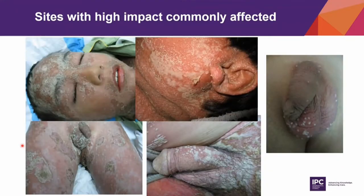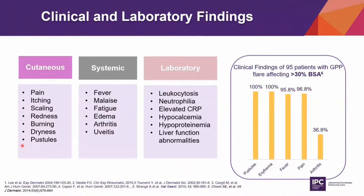Facial and genital lesions are actually not uncommon in our patients with this distressing disease. The affected skin is usually very painful, and patients with GPP flare are usually very ill with fever, malaise, fatigue, edema, and arthritis. Common laboratory findings include leukocytosis, neutrophilia, elevated CRP, hypocalcemia, hyperproteinemia, and abnormal liver function tests.